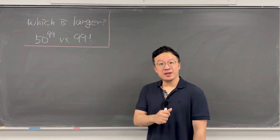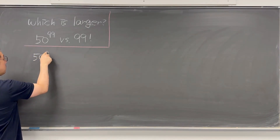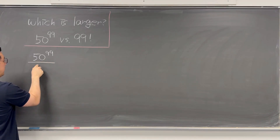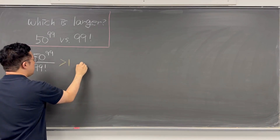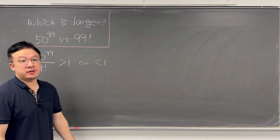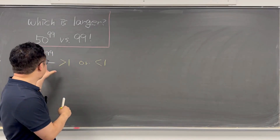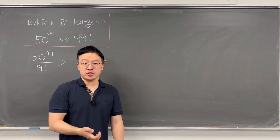The second method is to make a fraction. Put 50 to the power of 99 in the numerator and 99 factorial in the denominator, to see if this fraction is greater than 1 or less than 1. If this fraction is greater than 1, then 50 to the power of 99 is greater. If this fraction is less than 1, then 99 factorial is greater.